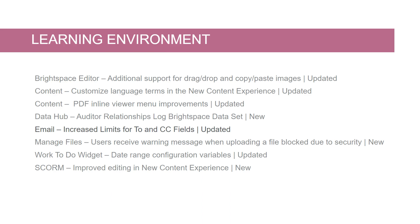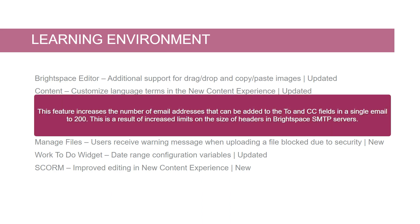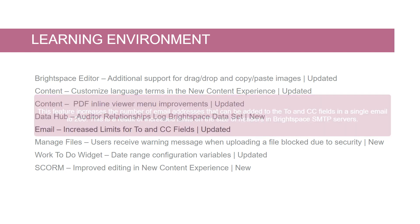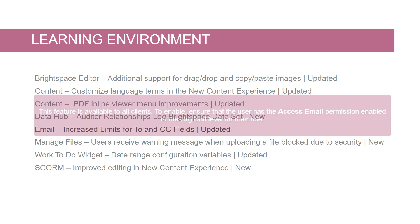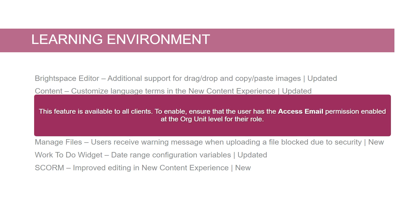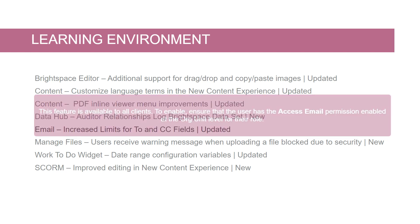Email: increased limits for CC/BCC fields, updated. This feature increases the number of email addresses that can be added to the CC/BCC fields in a single email to 200. This is a result of increased limits on the size of headers in Brightspace SMTP servers. Previously, the limit was 50 email addresses. This feature is available to all clients. To enable, ensure that the user has the Access Email permission enabled at the org unit level for their role.